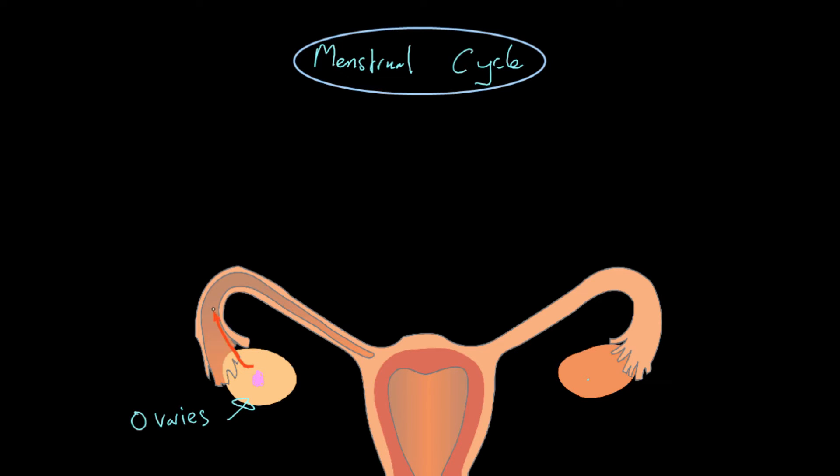So released down the fallopian tube. These are known as the fallopian tubes and it travels down until it reaches the womb or the uterus. So this here is the uterus. And this here is the fallopian tube.